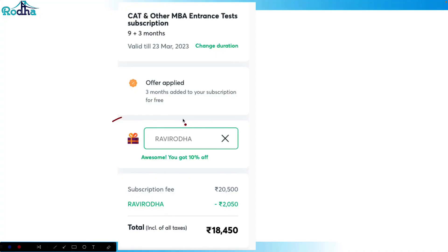Many of you were asking for some offer, so this is the offer launched just now seeing the current scenario. From March, there is a nine-month subscription on which till 31st March you get this offer of three months free. In the cost of nine months you get a 12-month subscription. You just need to apply the referral code RAVIRODHA.